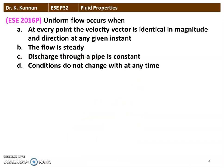The next question from the 2016 question paper: Uniform Flow occurs when (a) at every point the velocity vector is identical in magnitude and direction at any given instant, (b) the flow is steady, (c) discharge through the pipe is constant, (d) conditions do not change with any time. The correct answer is option A: Uniform Flow occurs when the velocity vector is identical in magnitude and direction at any given instant.